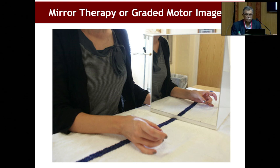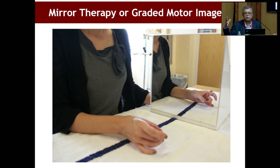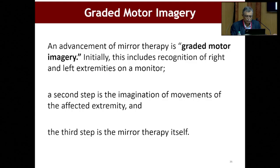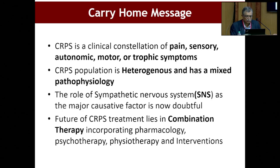Mirror therapy or graded motor imagery can help with mobilization when trophic changes are present. The patient places the normal hand in front of the mirror and the abnormal hand behind it. When the patient moves the normal hand, the affected hand also starts moving involuntarily. This is a very good physiotherapeutic and rehabilitation modality, called graded motor imagery.